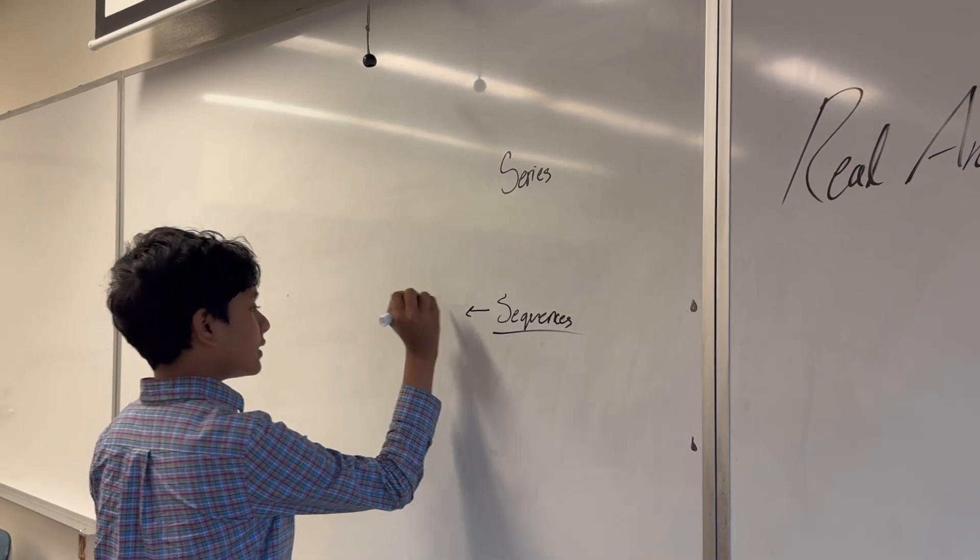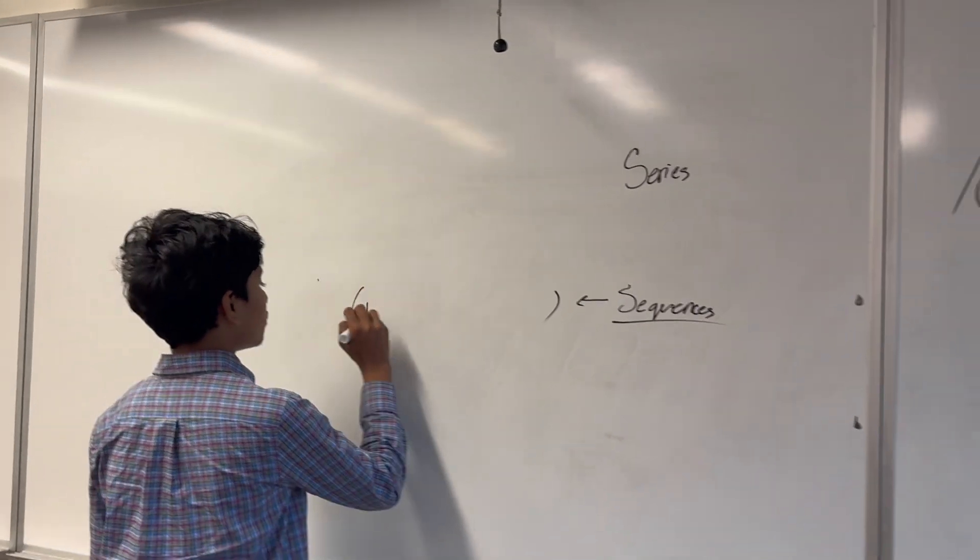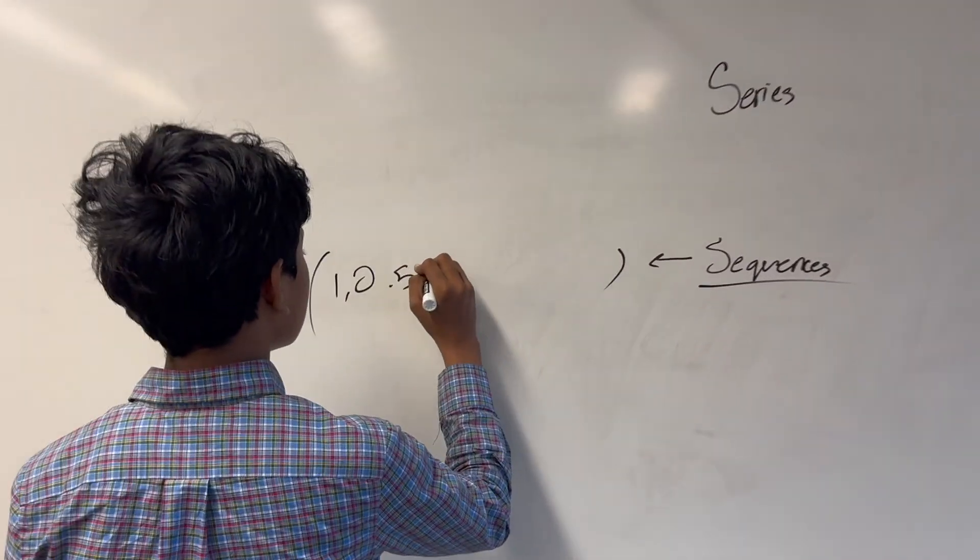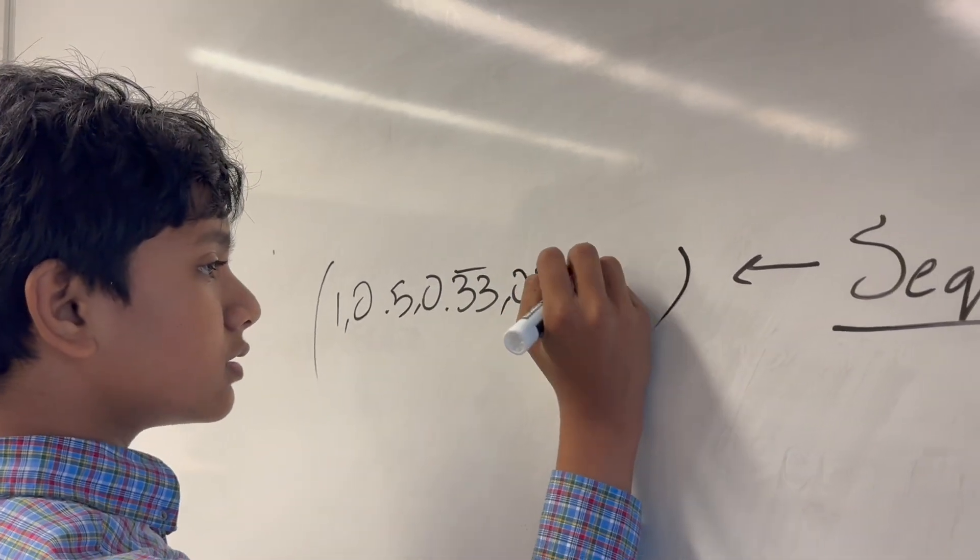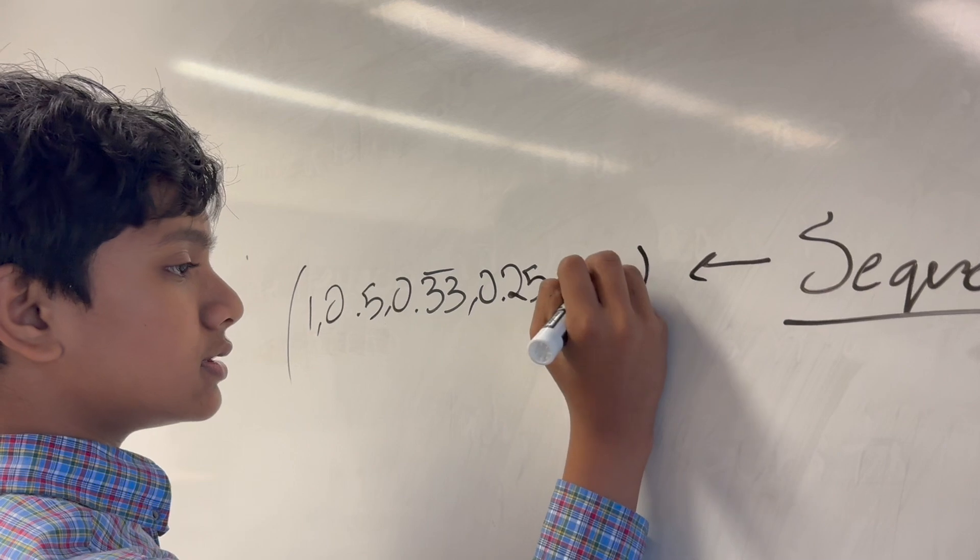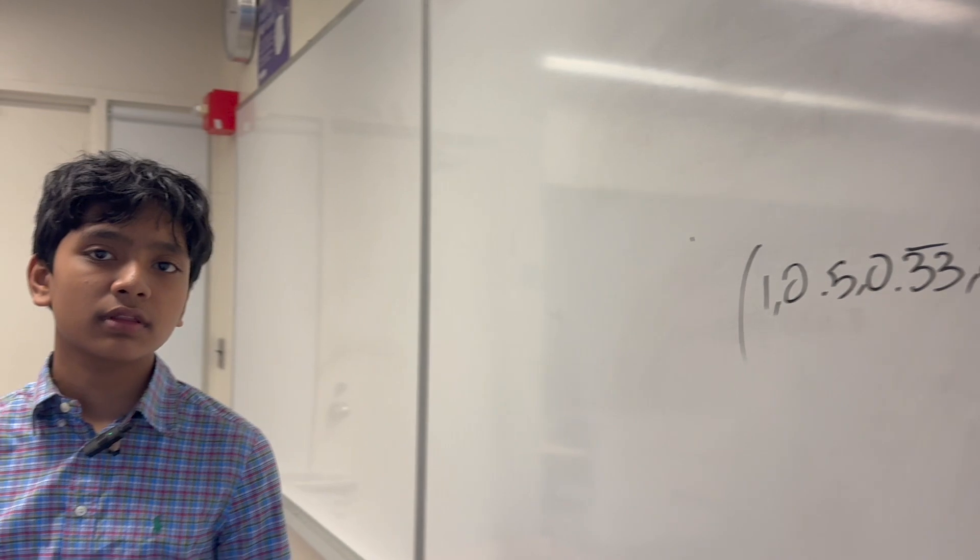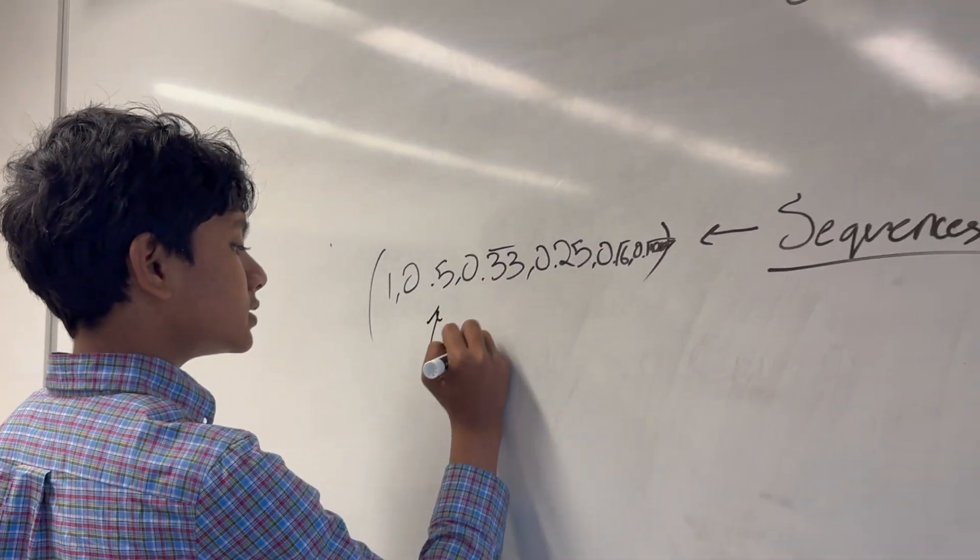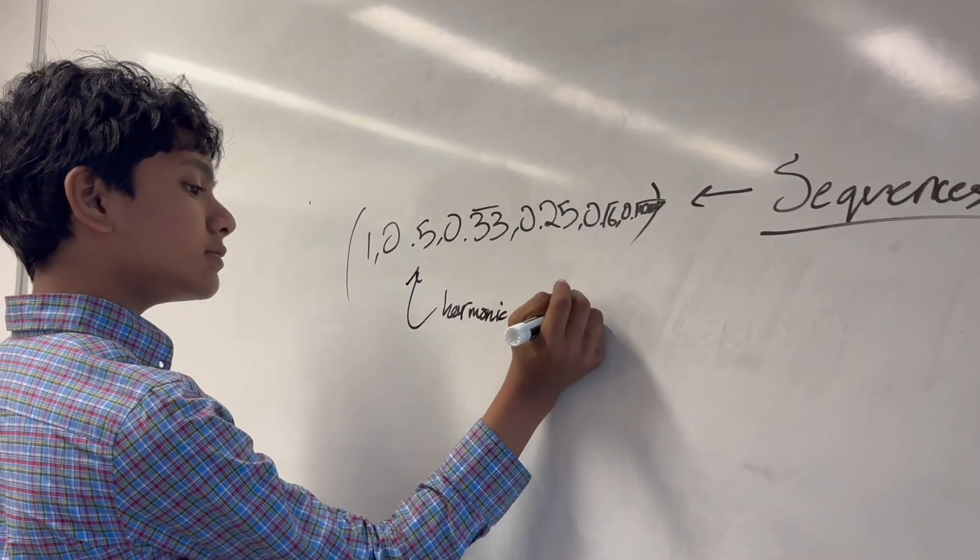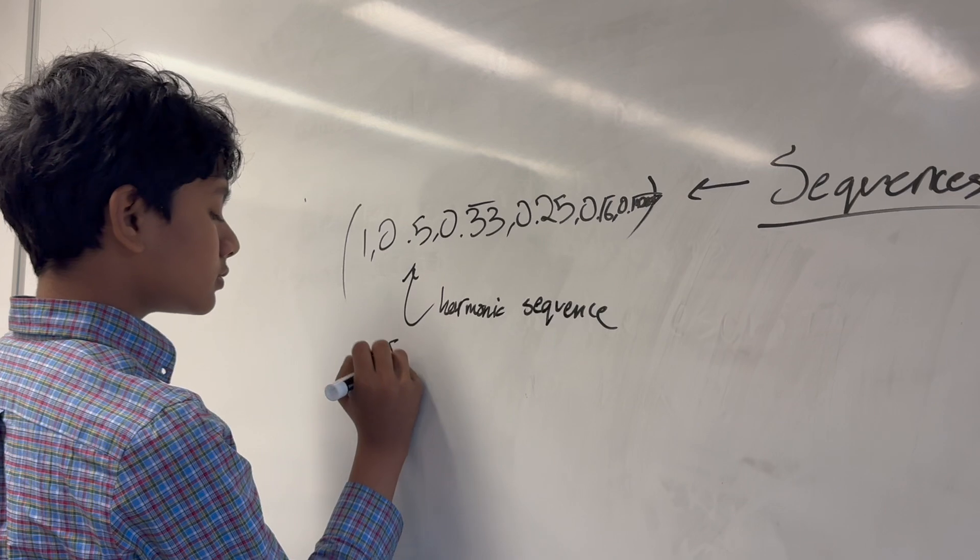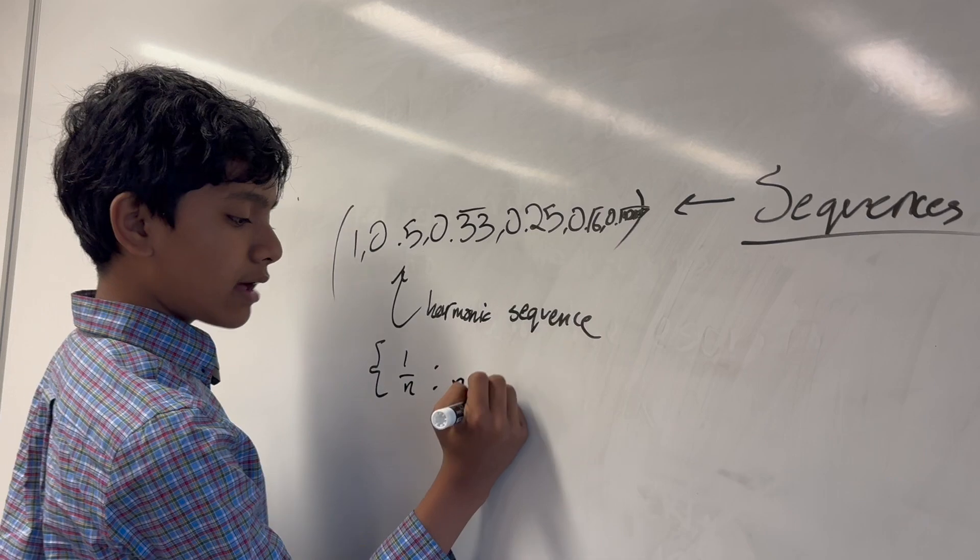Sequences are the simpler of the two. They are just an infinite collection of numbers that follow a certain pattern. For example: 1, 0.5, 0.33, 0.25, 0.16, 0.142857, and so on and so forth. We might recognize this as the harmonic sequence, or as it may alternately be described, all 1 over n, such that n is a natural number.